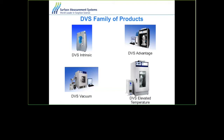There are different versions of the system available. The DVS Intrinsic has a temperature range of 20 to 40°C and does water only. The DVS Advantage does both water and organic vapors with a temperature range of 5 to 60°C, and can be connected to a Raman spectrometer. The DVS Elevated Temperature system goes from 20°C to higher temperatures, with a standard preheater up to 200°C and an optional high-temperature preheater up to 300°C.